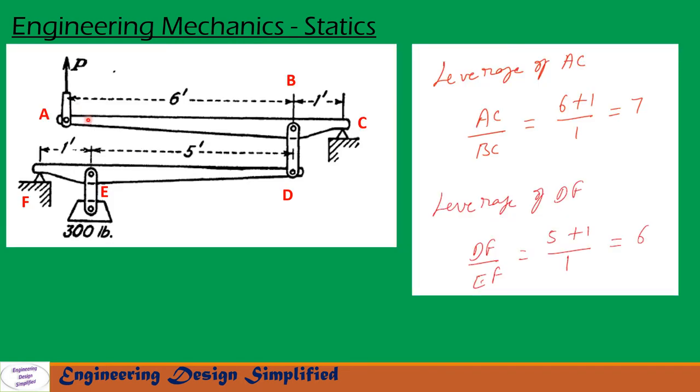First, let us find the leverage of AC. Leverage of AC can be written as AC divided by BC. So AC by BC equals 6 plus 1 by 1, which equals 7. So the leverage of this link is 7.